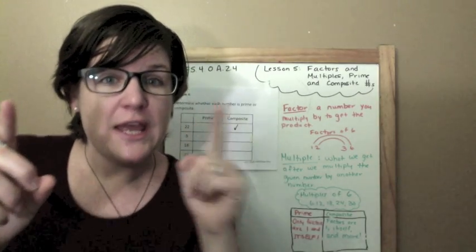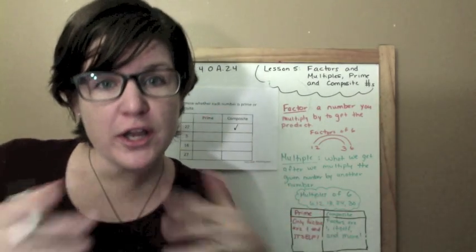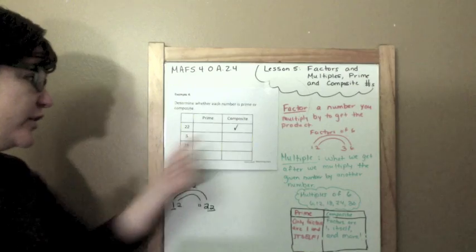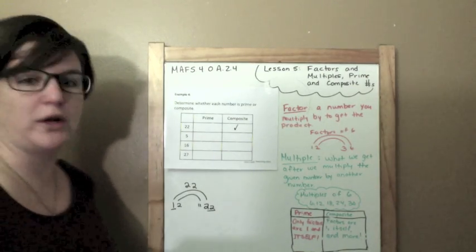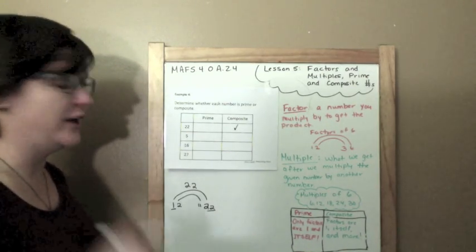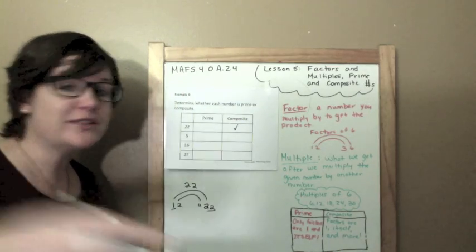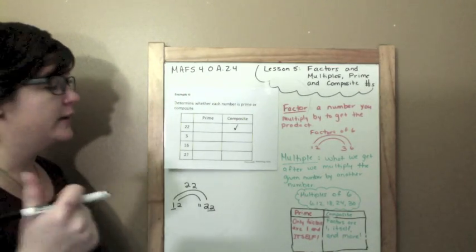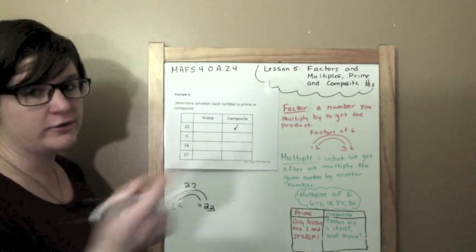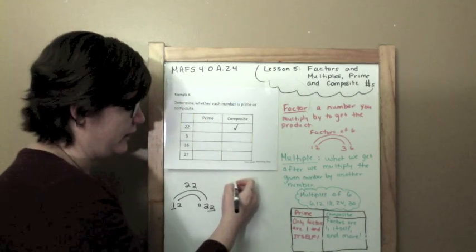We're just going to see if we can find the more. If we can find 1, itself, and then 1 extra factor pair, then we are good to mark the Composite column just because we're short on time today. Now, your teacher may want you to list all the factors for these types, but for me, right now, I'm just going to show you to prove that it's composite.